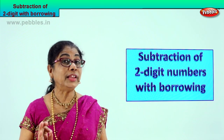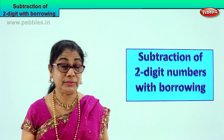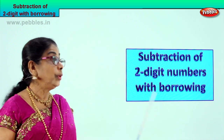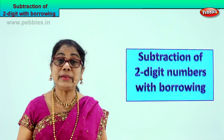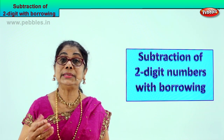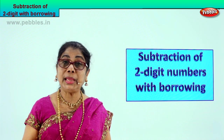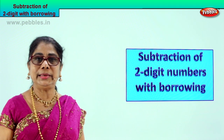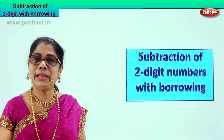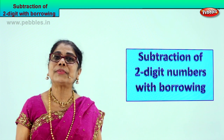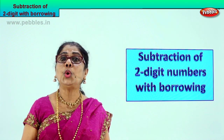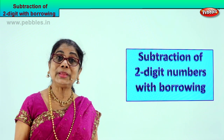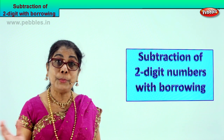Hi children, today we are doing something different. We are doing subtraction of two digit numbers, and here we are going to borrow with the number. The second number is small, big on the top — you have to borrow. You cannot minus, you cannot take away a big number from a small number. So we are going to do a nice different type of sum — subtraction with borrowing.